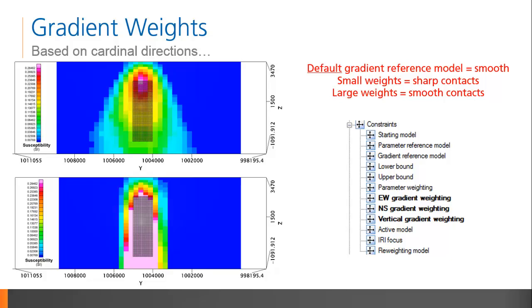Keeping the default smooth gradient reference model, we make changes to our confidence in it by adjusting the gradient weights in the lateral and vertical directions. Since we expect the intrusive to have a well-defined contact, we lower our confidence weighting in the east-west and north-south directions for the smooth reference. Since we expect the intrusive to be vertically homogenous, we increase our confidence weighting in the smooth reference model in the vertical direction. The result is a distribution of susceptibility that has well-defined horizontal boundaries and extends vertically to depth.